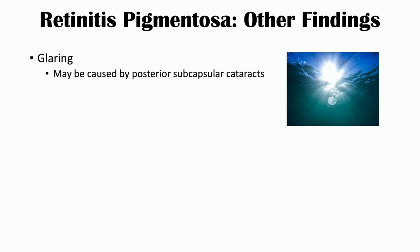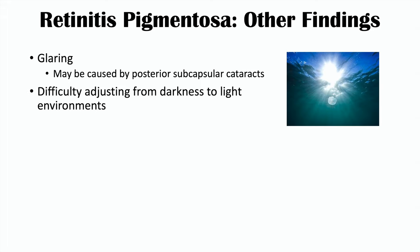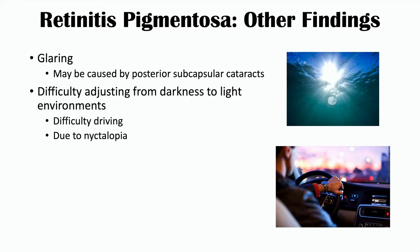There are some other clinical findings, including glaring — glare from different objects — which is more likely caused by posterior subcapsular cataracts. There can also be difficulty adjusting from darkness to light environments. Because there are changes in light sensitivity, especially with reduced night vision in dimly lit environments, patients can have difficulty adjusting between environments with different levels of lighting. This can often lead to difficulty driving, frequently due to nictalopia — that decreased night vision we discussed.